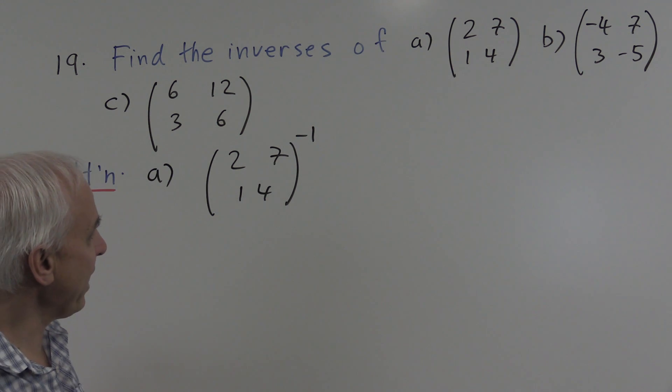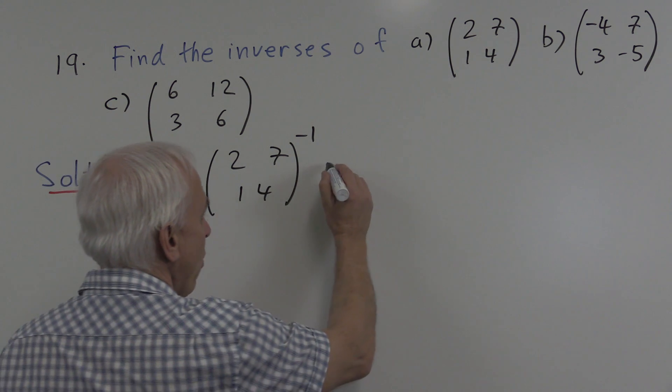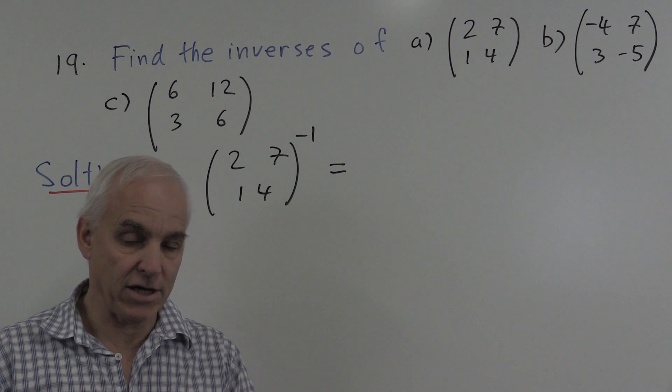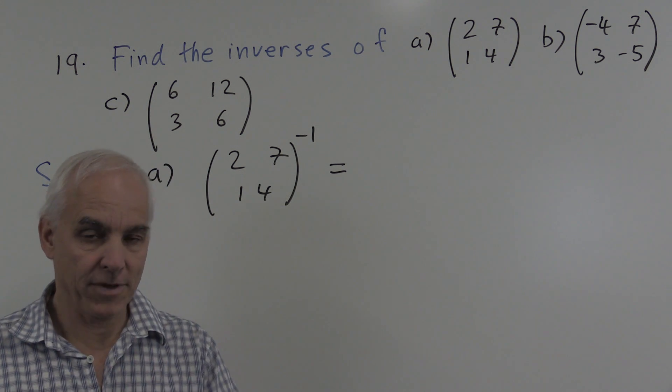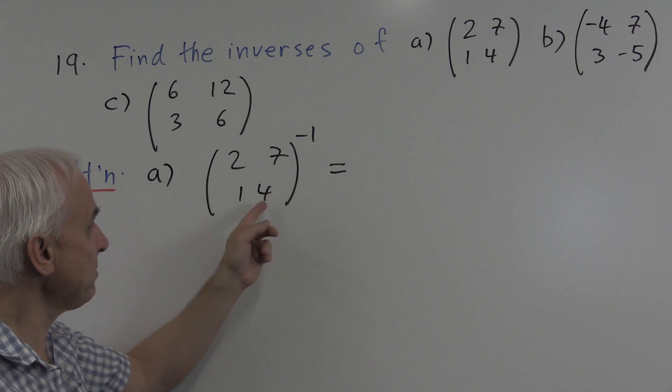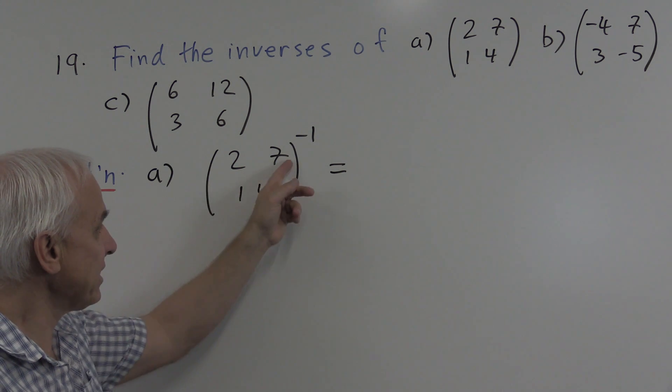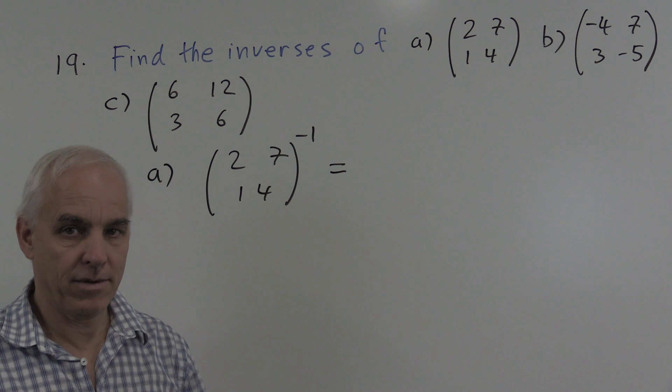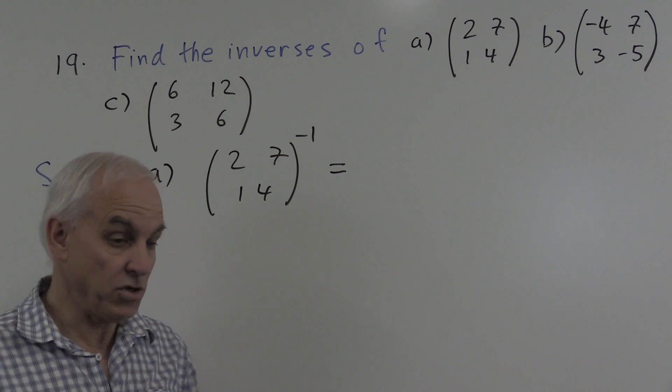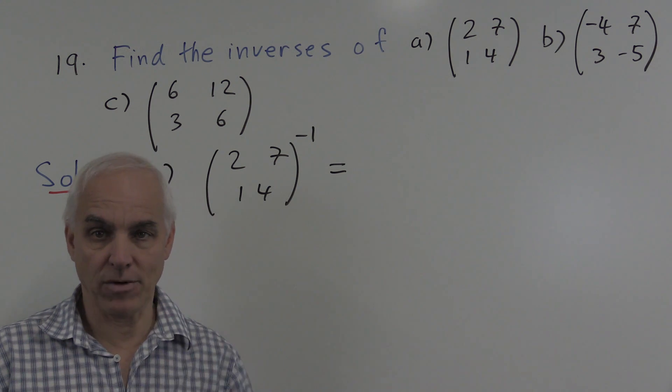So how do we find the inverse? Well, first of all, we have to check whether this matrix actually is invertible. To do that, we look at the determinant, which is two times four minus seven times one. That's eight minus seven, which is one. So the determinant is one, which is non-zero. So this matrix is invertible.